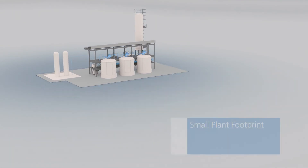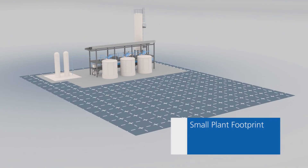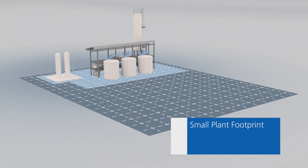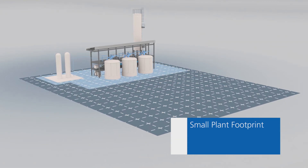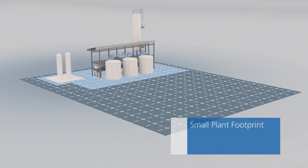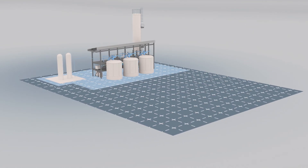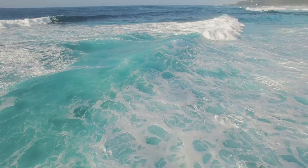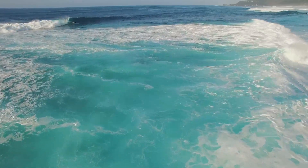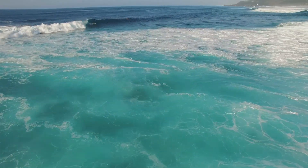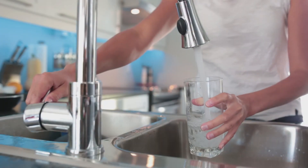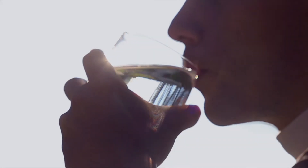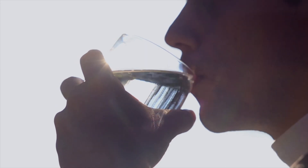Compared to conventional remineralization processes, the Omya Advanced Remineralization Process has a small plant footprint, which translates to lower investment costs for process equipment and the necessary civil works. Most importantly, the Omya Advanced Remineralization Process provides consistent, corrosive-free, and stable water, and is superior to all other processes currently used.